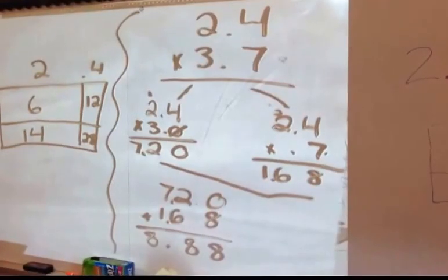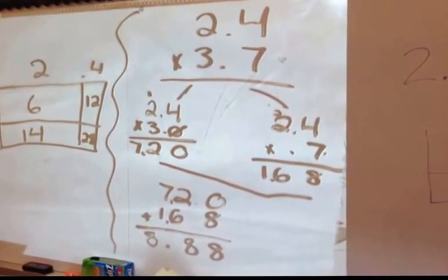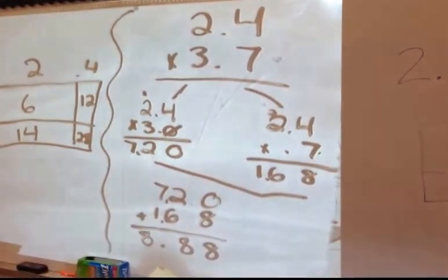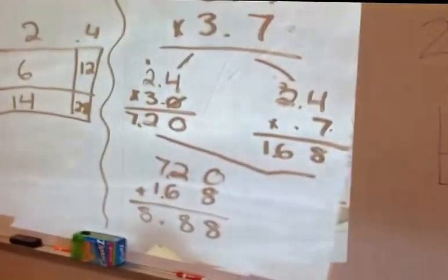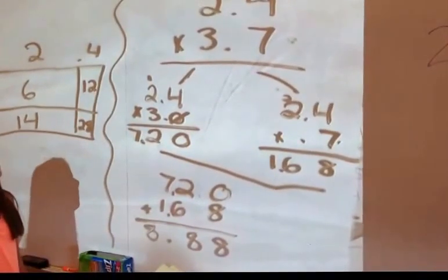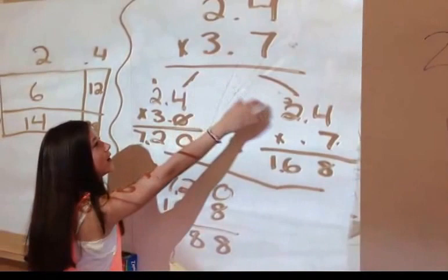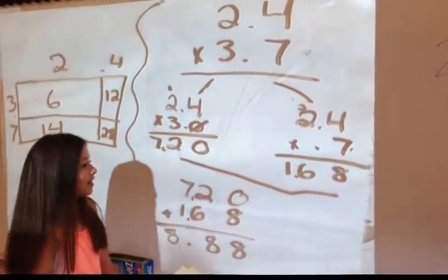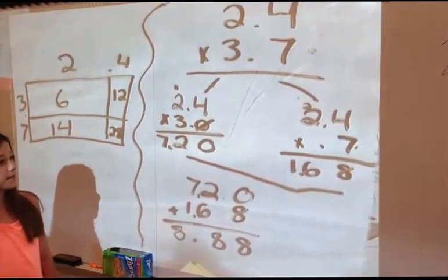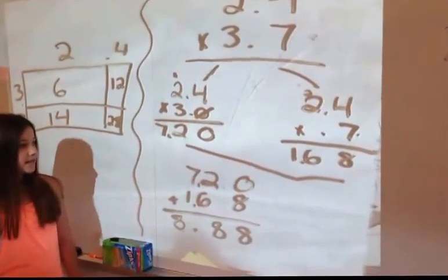Okay. So our problem today is multiplying two decimals. 2.4 times 3.7. And you are asked to use an area model. So could you please explain to me how you did the number bond way? First, I broke it apart by doing the whole and the decimal. Okay. So you did 2.4 times 3 and 2.4 times 7 tenths, correct? Yeah. Okay. And how'd that go? What'd you do?